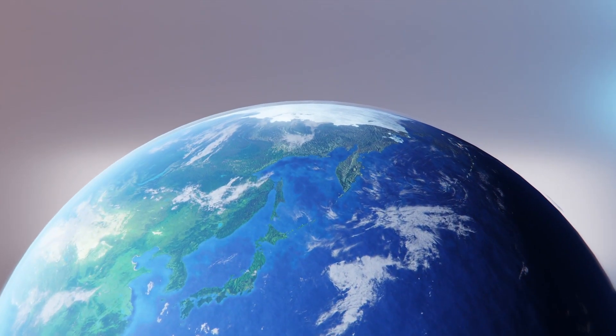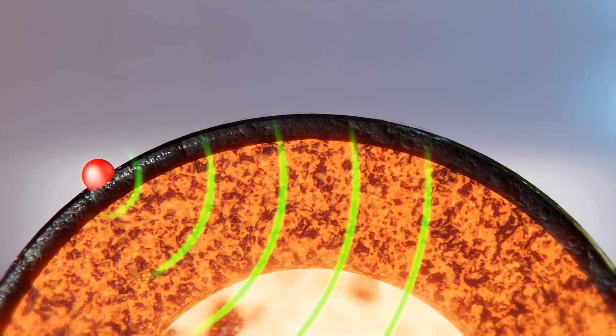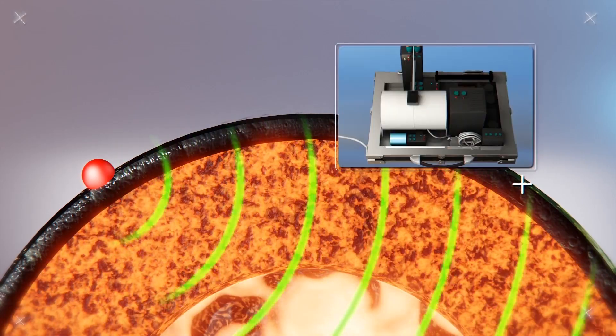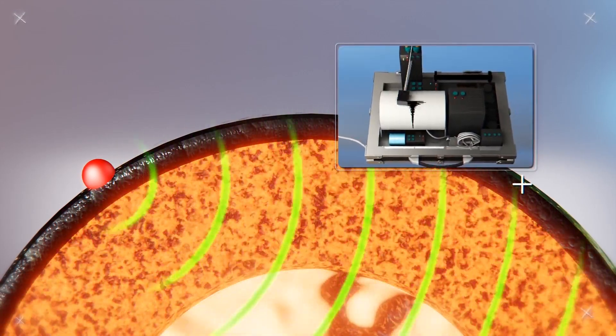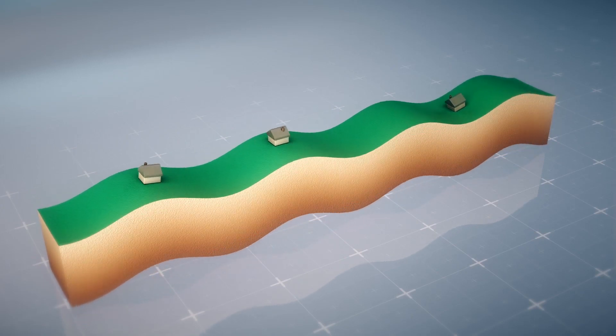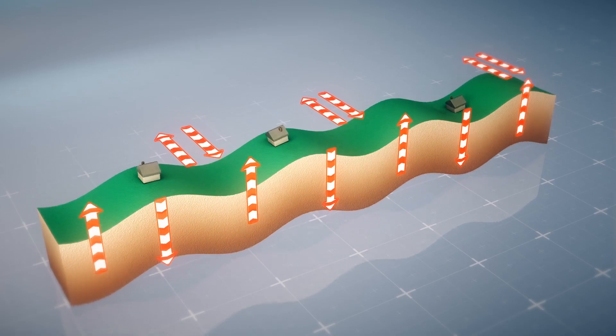The team of researchers analyzed 7,000 seismograms from earthquakes of 6.5 magnitude or greater that occurred from 1990 to 2008 using Sequencer, a machine learning algorithm. They specifically searched for echoes of seismic waves known as shear waves or S-waves beneath the Pacific Ocean basin.